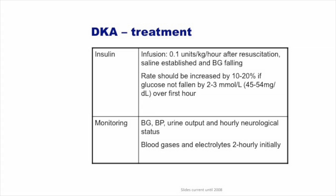We normally give insulin at 0.1 units per kg per hour by infusion. In our resource-limited settings, we don't have infusion pumps. We give 0.1 units per kg per hour and lower glucose at 50 milligrams per deciliter per hour — not more than that, to avoid the disequilibrium syndrome. If blood glucose level fails to fall, we increase by a ratio of 10 to 20 percent, but with more serious monitoring. The intern should not leave until the DKA is resolved.